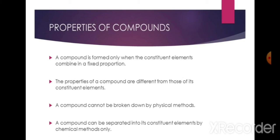The properties of a compound are different from those of its constituent elements. A compound cannot be broken down by physical methods because its elements are chemically combined. For example, sodium chloride cannot be separated by physical methods such as filtration. A compound can be separated into its constituent elements by chemical methods only.